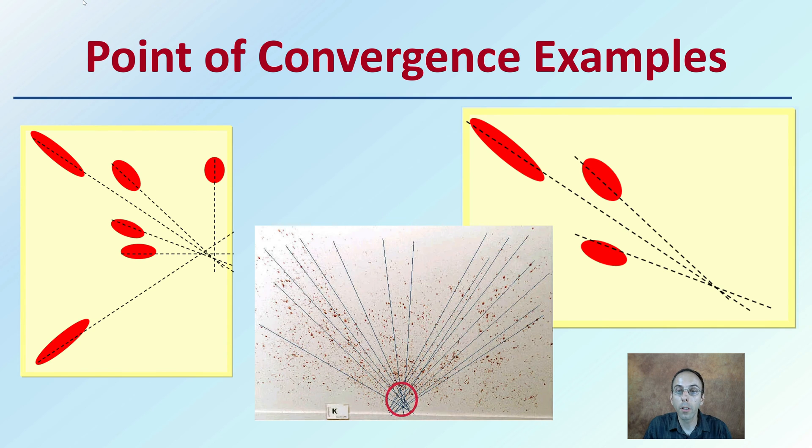Looking at the point of convergence examples, when we're determining where those blood splatters may have occurred, it's very important to try to draw lines and determine where that convergence point actually may be. We see it here on the cartoon representations as well as a larger real-world image, where if you look at all these individual little drops, we see definitely a point of convergence located right here in the red circle.